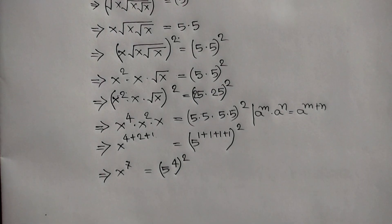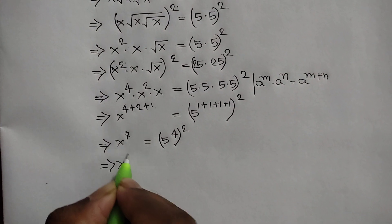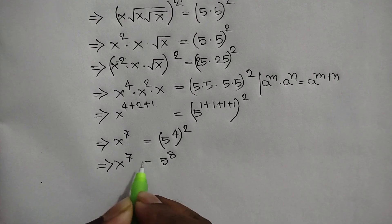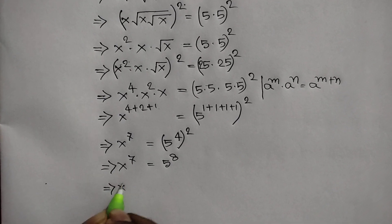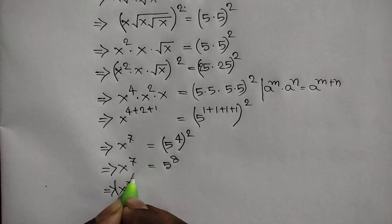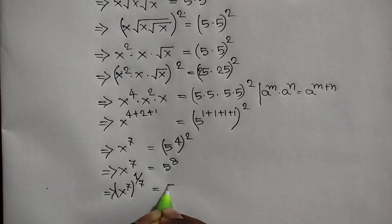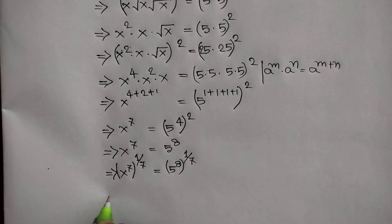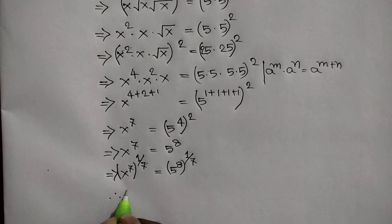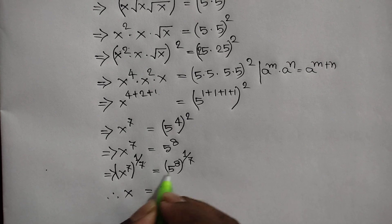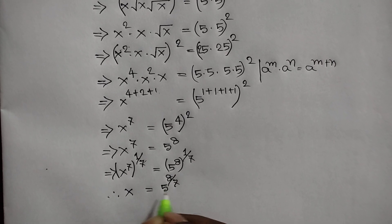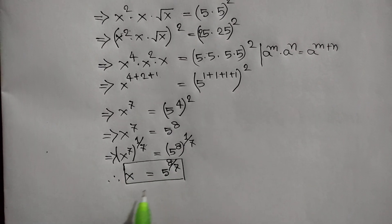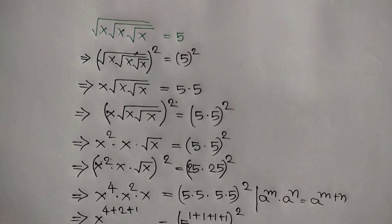So x to the power 4 plus 2 plus 1, that means 7, is equal to 5 to the power 1 plus 1 plus 1 plus 1, which is 4, whole squared — or x to the power 7 is equal to 5 to the power 8. Raising both sides to the power 1 over 7, the 7 cancels out, so the value of x is 5 to the power 8 over 7. If you like this video please subscribe to my channel, and see you in the next video, bye bye.